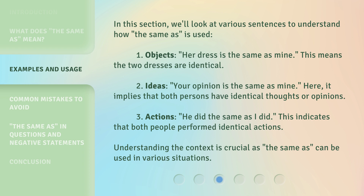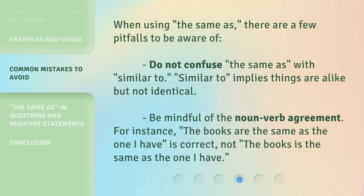Understanding the context is crucial, as the same as can be used in various situations. When using the same as, there are a few pitfalls to be aware of. Do not confuse the same as with similar to — similar to implies things are alike but not identical. Also, be mindful of noun-verb agreement. For instance, the books are the same as the one I have is correct, not the books is the same as the one I have.